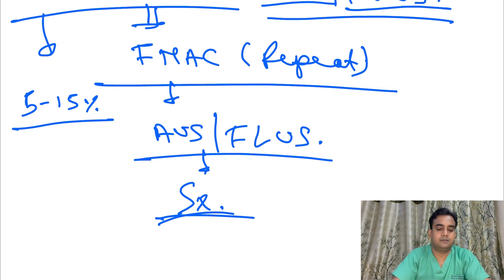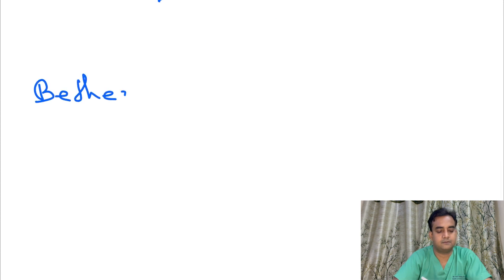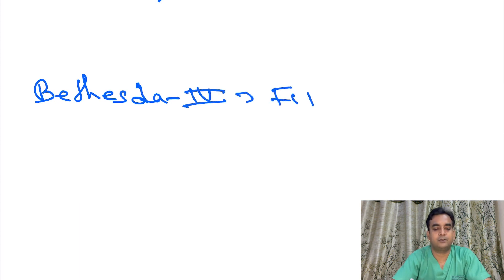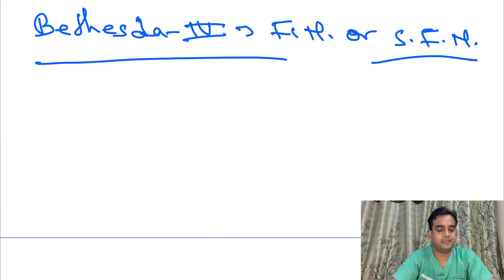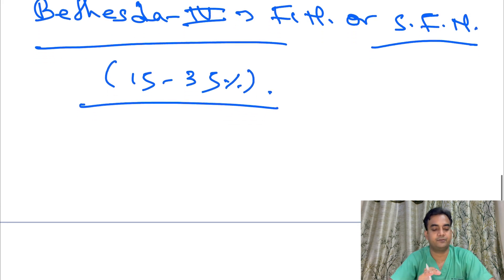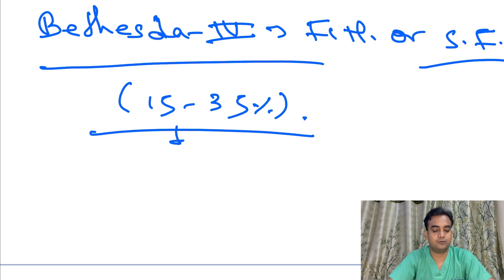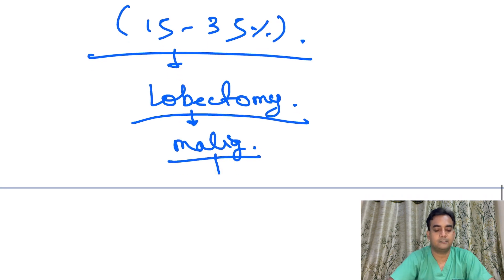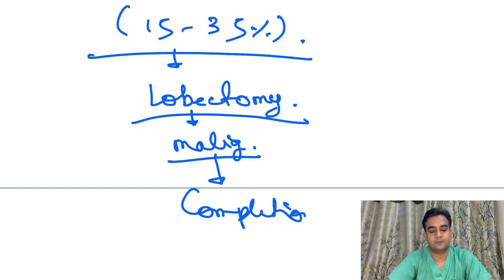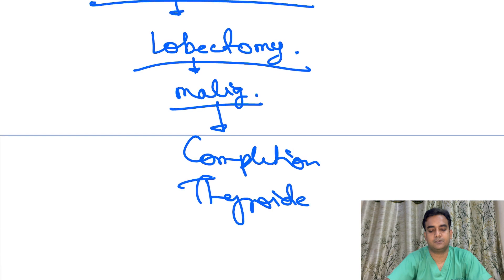Bethesda 4 is follicular neoplasm or suspicious for follicular neoplasm. The chance of it being malignant in the final histopathological specimen is 15 to 35 percent, which is a fair amount of risk. What we do is lobectomy of the involved lobe, and if in the final histopathological specimen it comes out to be malignant, then you can do completion thyroidectomy.